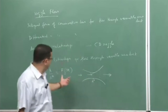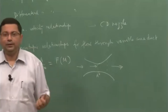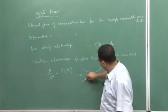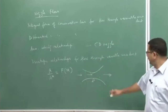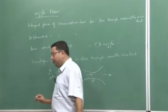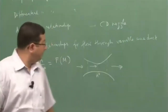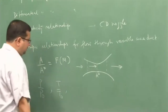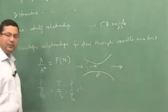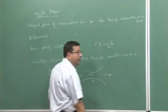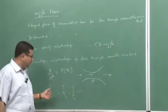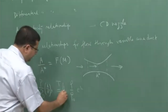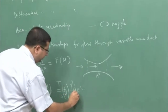We have also discussed that this relationship is quadratic in nature. Therefore, for every area ratio, there are going to be two possible solutions for Mach number — one subsonic and one supersonic. We derived expressions for p/p₀, T/T₀, and ρ/ρ₀, where p, T, and ρ are the values at a certain point. Since this is an isentropic relationship, these are functions of Mach number, giving pressure, temperature, and density ratios in terms of area ratio.